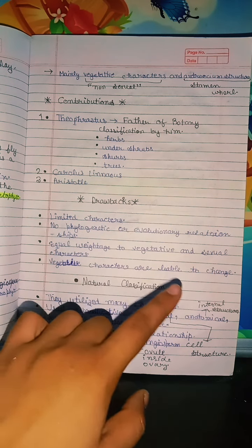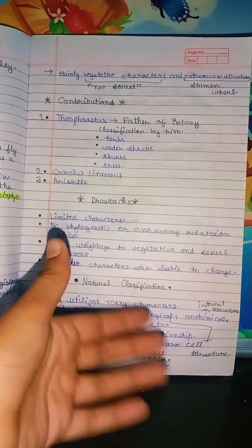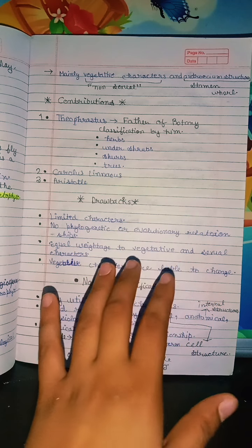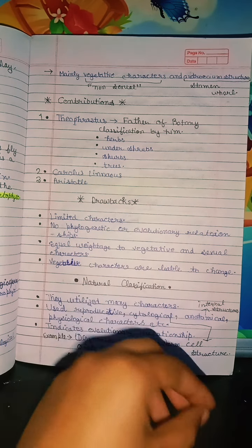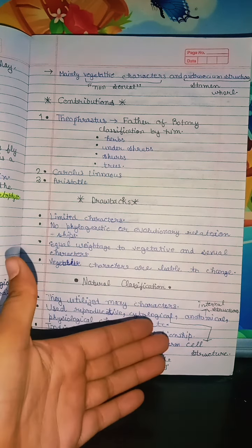Vegetative characters are liable to change. That is why sexual characters are preferred. They are not very weak. We have drawbacks because vegetative characters can change.